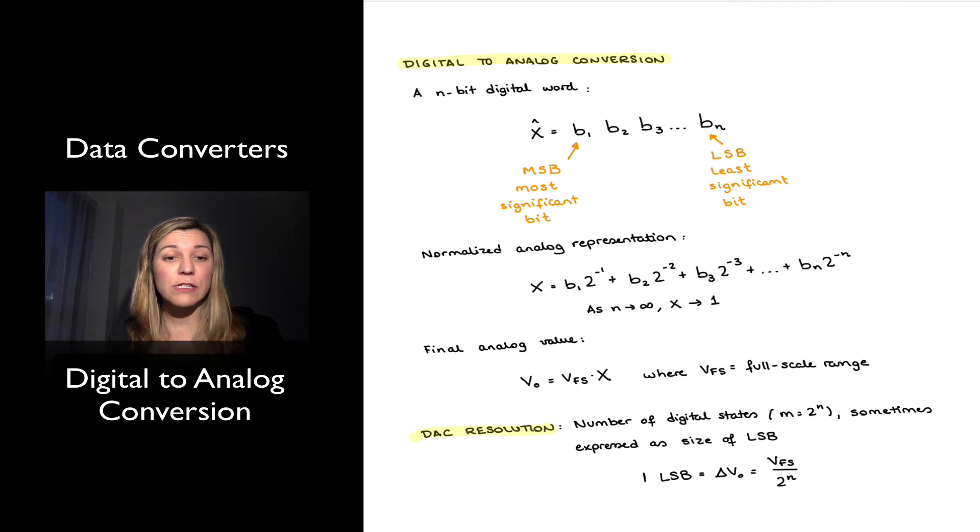However, sometimes the resolution of a system is instead expressed in terms of the size of the LSB, the least significant bit. And it basically represents the difference in analog voltage between one digital word and the next available digital word. So 1 LSB is going to be that delta in Vout that arises from basically increasing my digital word by 1. I can represent it as the full-scale voltage VFS divided by 2 to the power of n, which is the number of available states.